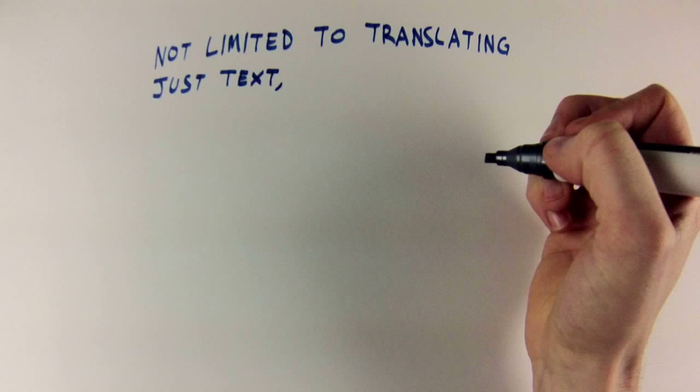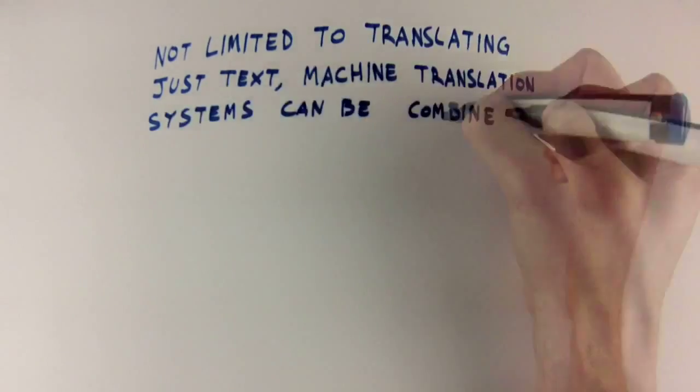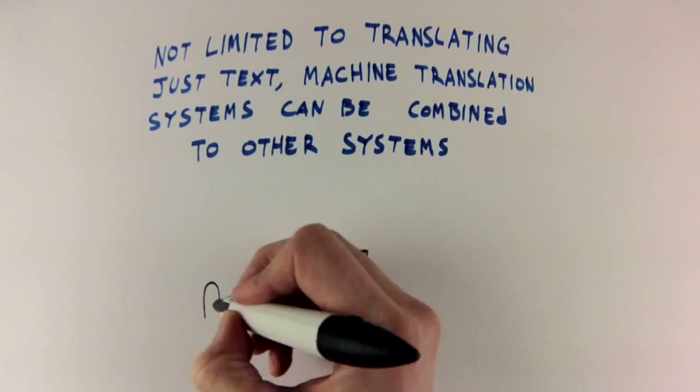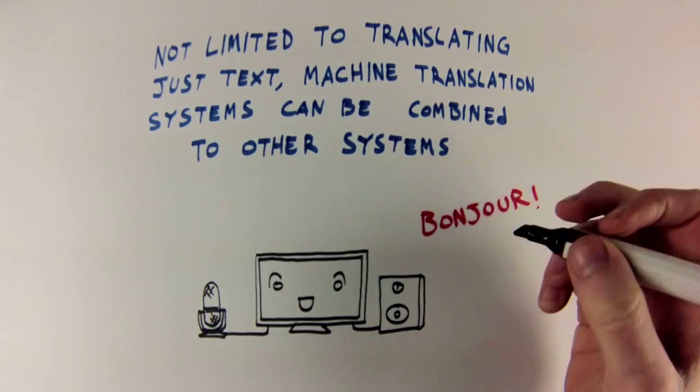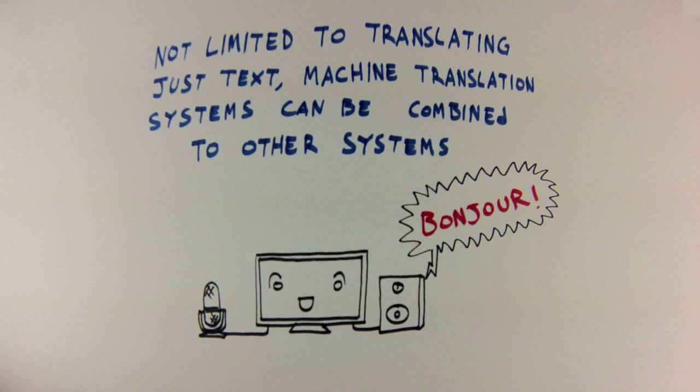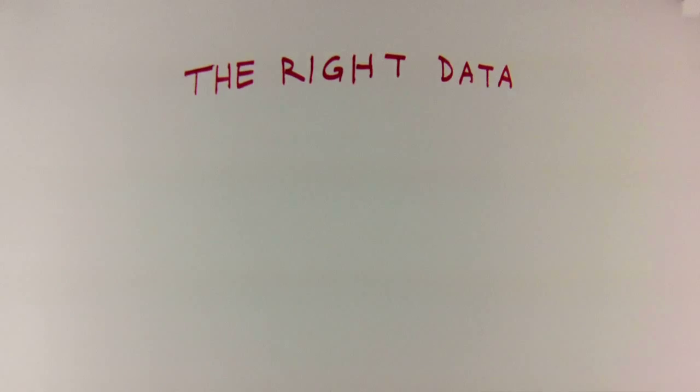What's more, these computer systems aren't limited to translating just written text. Once they've learned how to do the translation, these machine translation systems can be combined with another computer system that recognizes or synthesizes human speech, and you get a computer system that actually speaks another language. All you need to teach the computer to translate between two languages is the right data and its counterpart in another language.